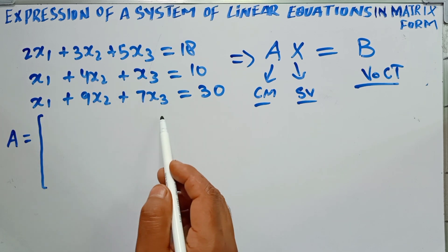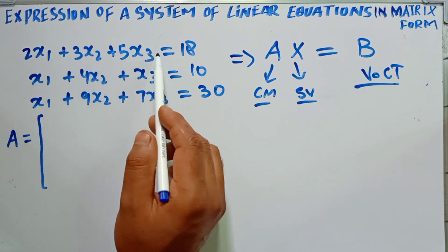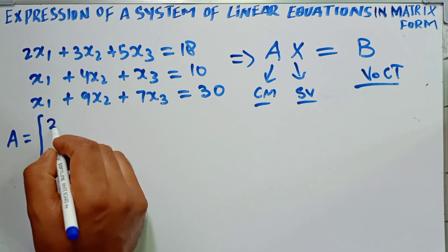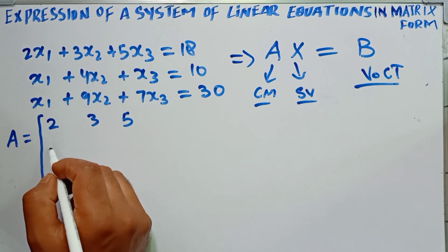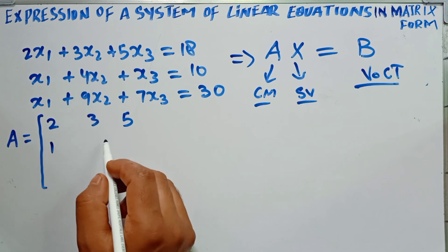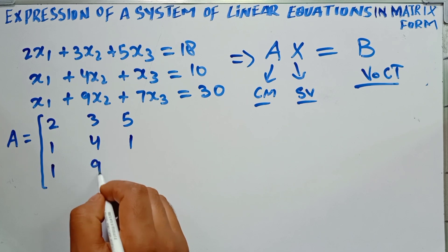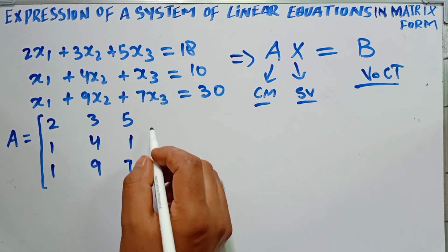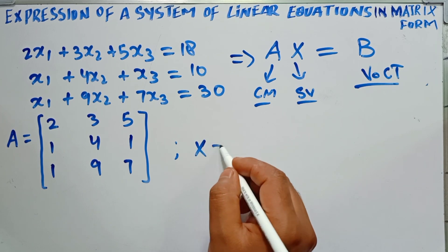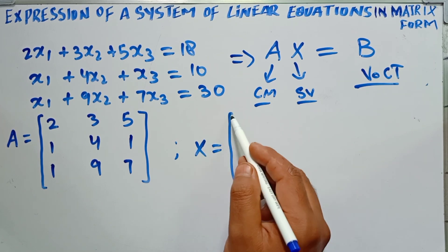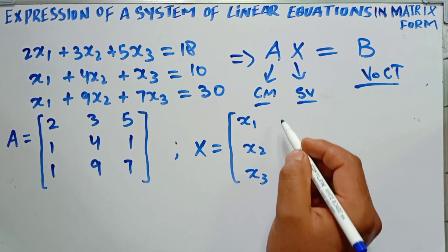The first row of A gives us the coefficients of the variables in the first equation: the coefficient of x1 is 2, of x2 is 3, and of x3 is 5. In the second equation the coefficients are 1, 4, and 1. In the third equation they are 1, 9, and 7. So this is matrix A. The solution vector X will be the column vector containing x1, x2, and x3.